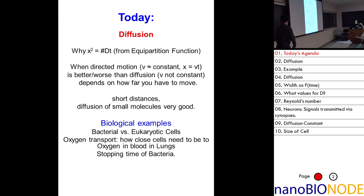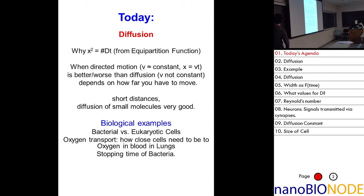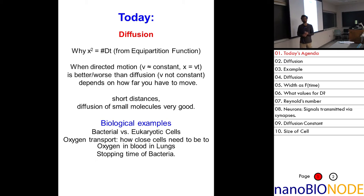For normal motion, x is equal to velocity times t — so x and t are linearly related to each other. Whereas for diffusion, the average value of x-squared equals 2Dt. So what does this mean? Why are these fundamentally different?